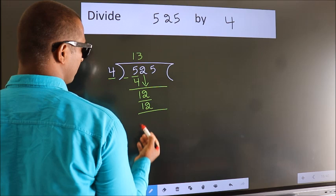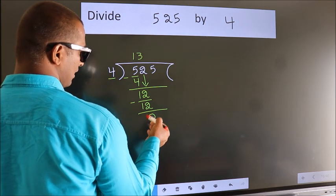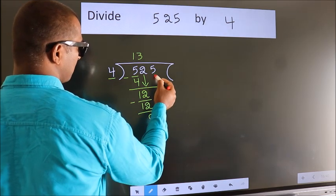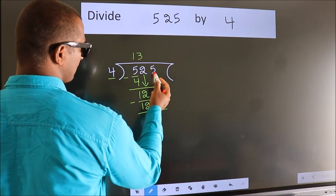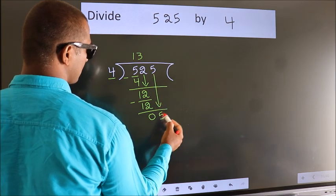Now, we subtract. We get 0. After this, bring down the beside number. So, 5 down. So, 5.